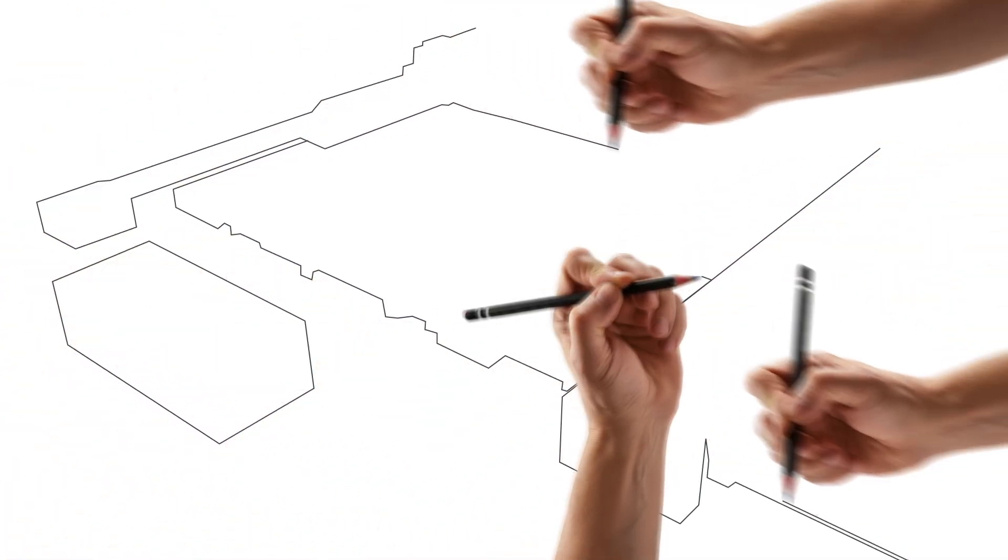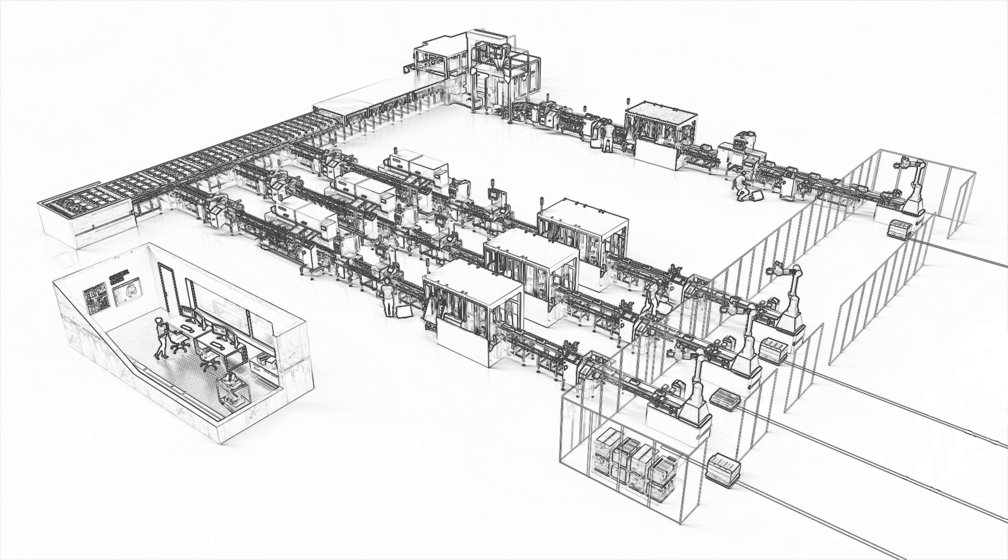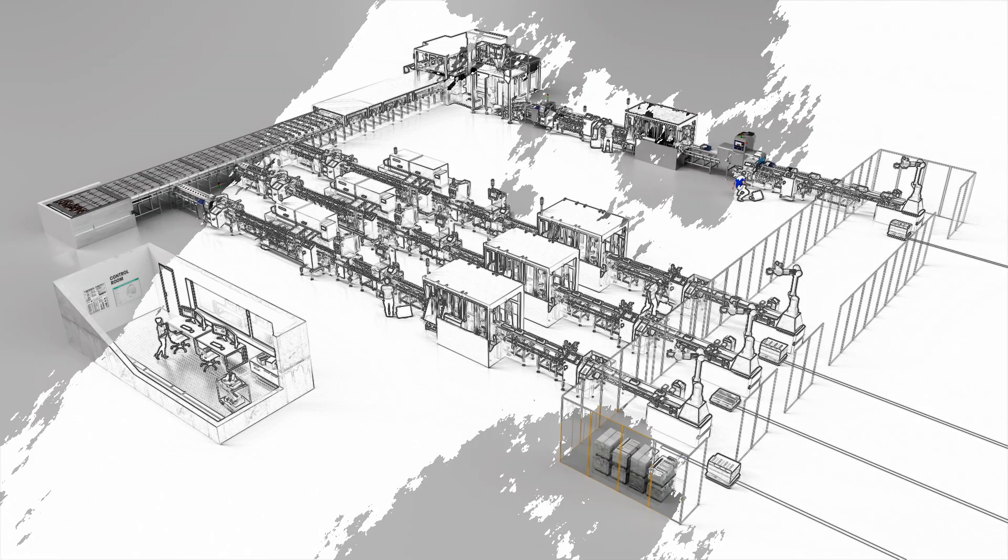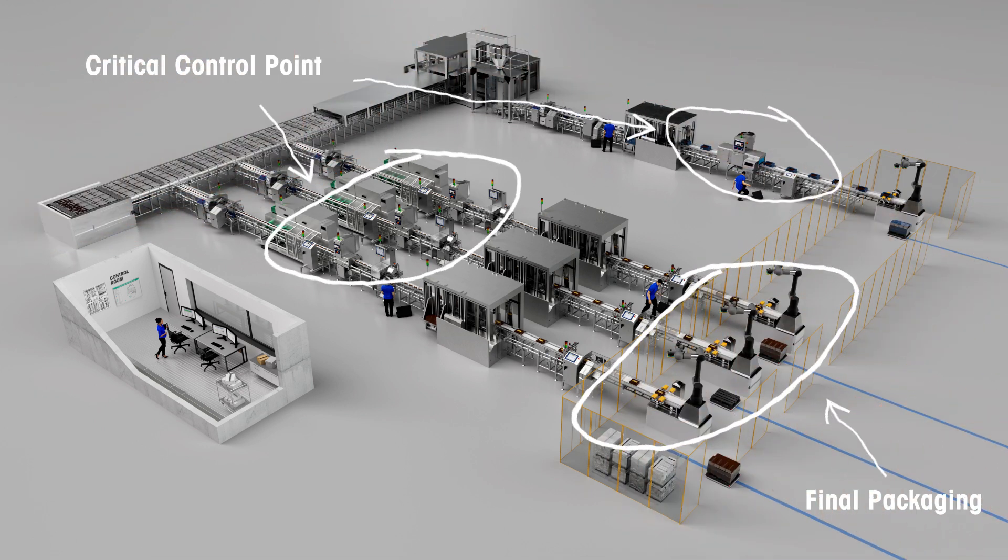X-ray systems should be installed at critical control points on the production line where contamination is likely to occur, from incoming goods and in processing right through to the end of line and final packaging stages.